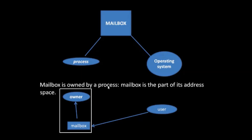If a mailbox is owned by a process, then the mailbox is part of the address space of that process. For example, if process P owns a mailbox, then the mailbox is part of the address space of process P. In this case, processes can be distinguished as owner and user. The owner can only receive messages from the mailbox, and the user can only send messages to the mailbox.